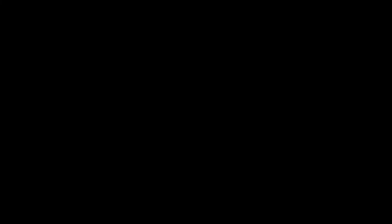In order to set a reference, the power meter and light source need to be connected together. How they are connected together depends upon the configuration of the link under test. Primarily, the reference method is determined by whether or not the ends of the fiber link are installed into patch panels. The TIA 526 cabling standard outlines three different reference methods based on how many reference cables are used: one-jumper, two-jumper, and three-jumper reference methods.